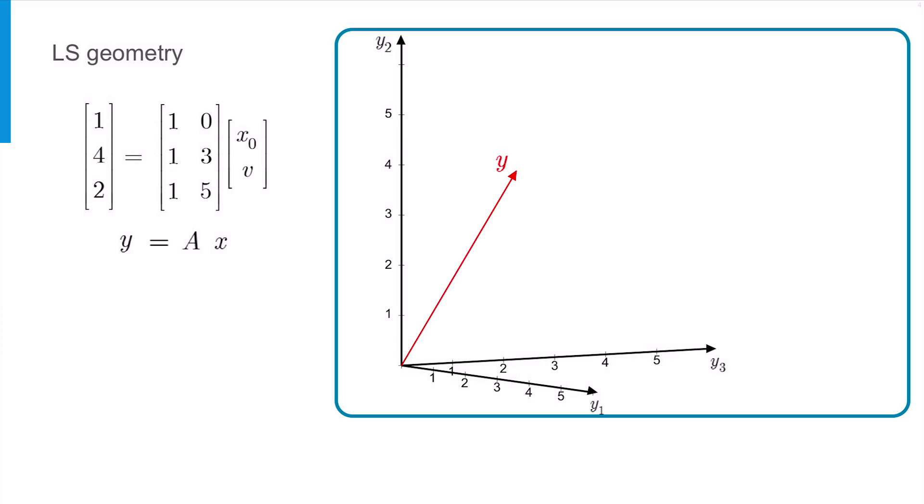So, let's visualize the column of A in this plot. We have two unknown parameters, and so two columns. If I plot them,